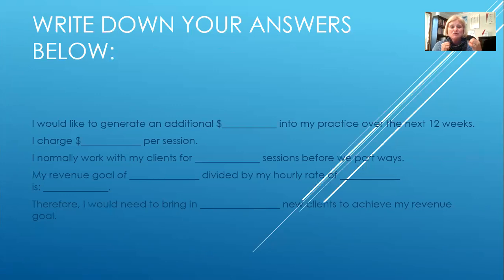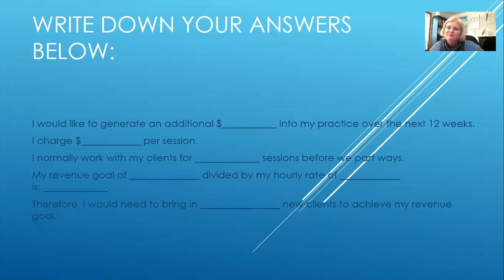So my revenue goal, which I decided in question number one, is now being divided by my hourly rate, and we come up with this many sessions. And if I know that my clients stay with me for three, five, or six sessions, then I know I need to bring in this many new clients to achieve my revenue goal. Not too much more complicated than that. There's no need to overcomplicate this — it's a great way to help you start setting vision, start focusing on revenue, and start focusing on everything that is positive about being in private practice.